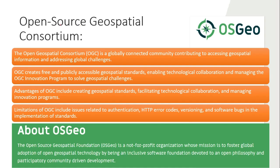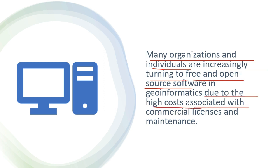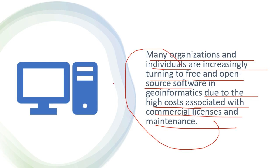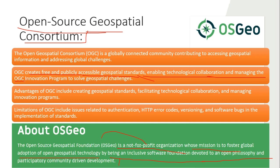The Open Source Geospatial Consortium was introduced because many organizations and individuals are turning to free and open-source software in geoinformatics due to the high costs of commercial licenses. It is a not-for-profit organization whose mission is to foster global adoption of open geospatial technology through an inclusive software foundation with an open philosophy and participatory community. It creates free and publicly accessible geospatial standards, enables technological collaboration, and manages the OGC Innovation Program to solve geospatial challenges.